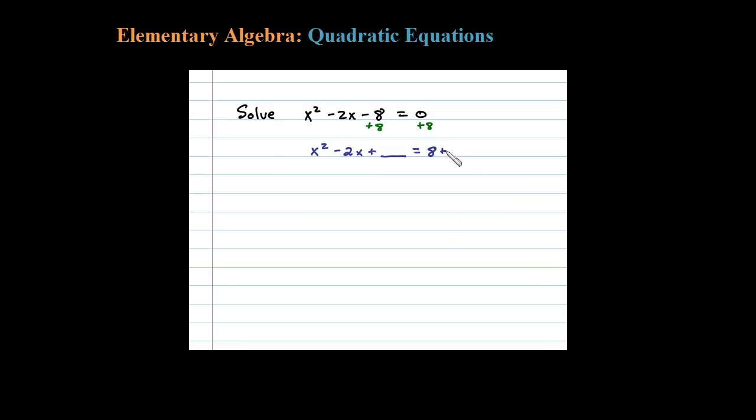a very special number to both sides. Now to complete the square you always look at the coefficient of your X term. In this case the coefficient there is negative 2. You want to take that number, divide it by 2, and then square it. So in this case when I do that I get negative 1 squared or 1.